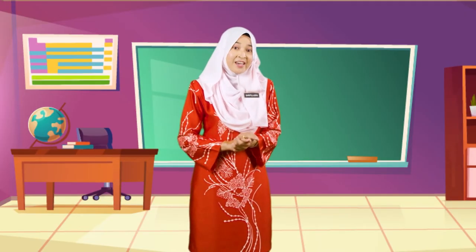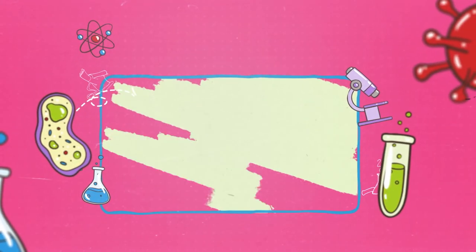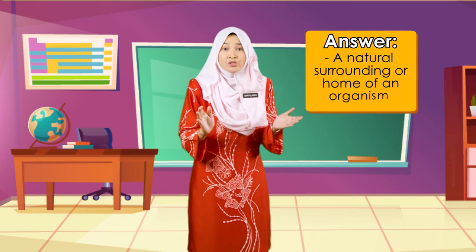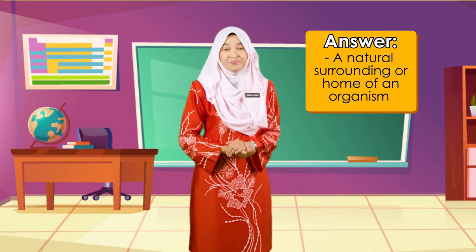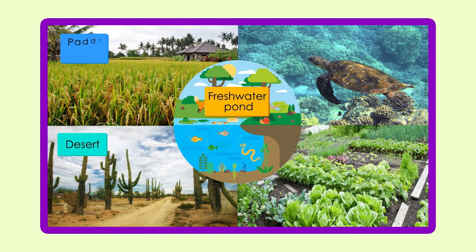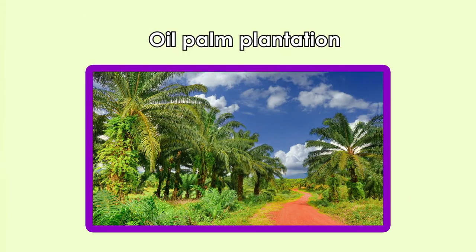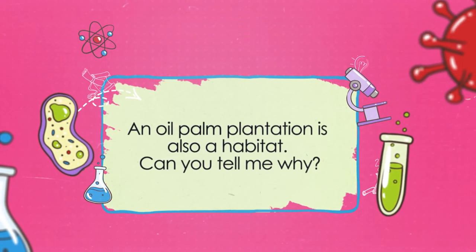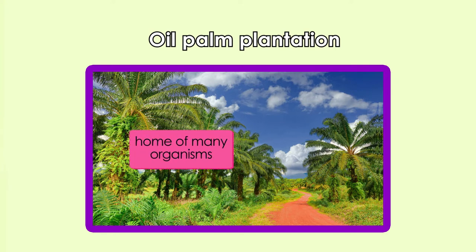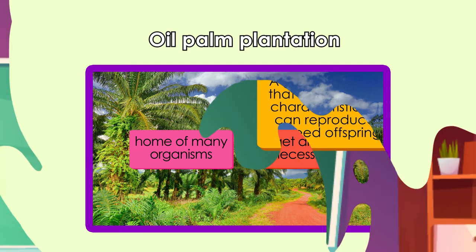Now let us go to the next slide. What is a habitat? A habitat is a natural surrounding or home of an organism. Examples of habitats include the freshwater pond, the desert, the paddy field, the vegetable farm, and the ocean. An old palm plantation is also a habitat because it is home to many organisms where they can get all the necessities to survive.